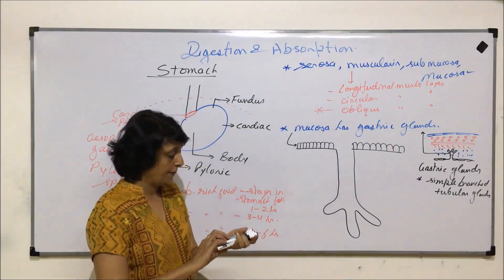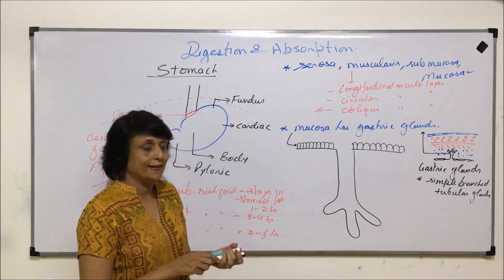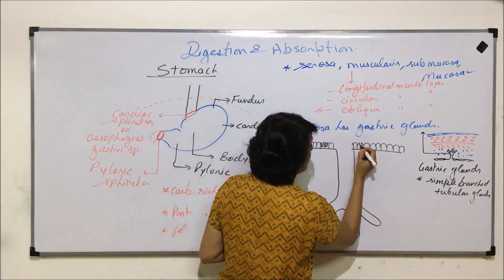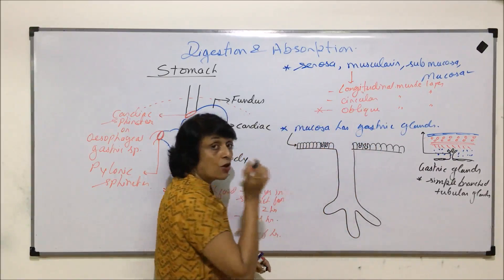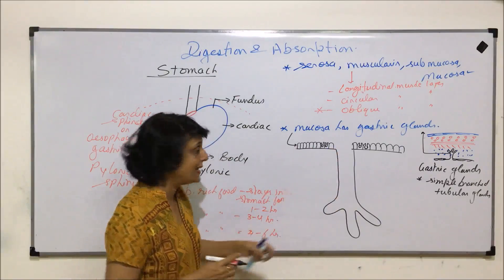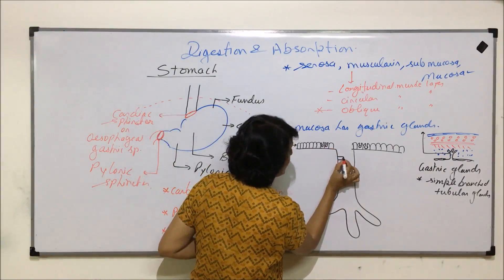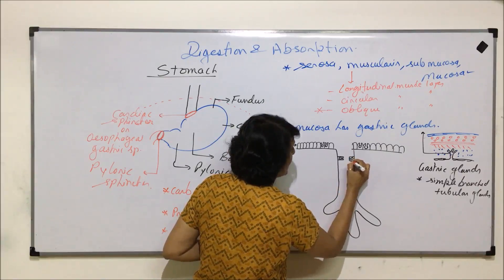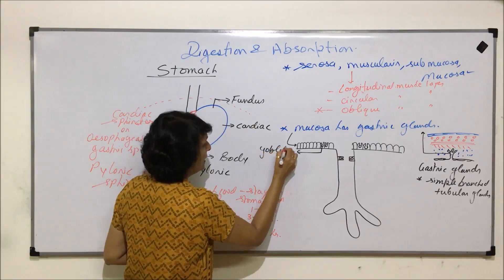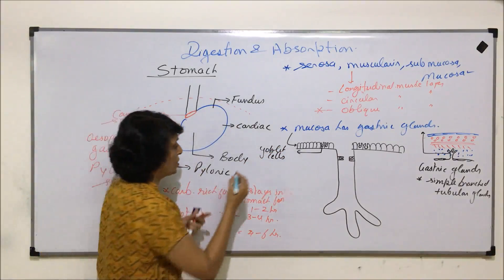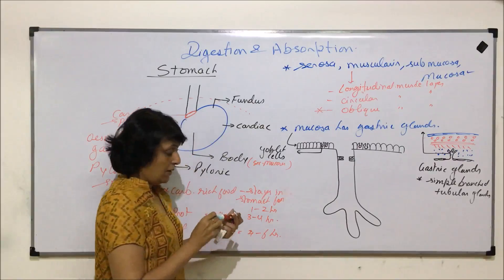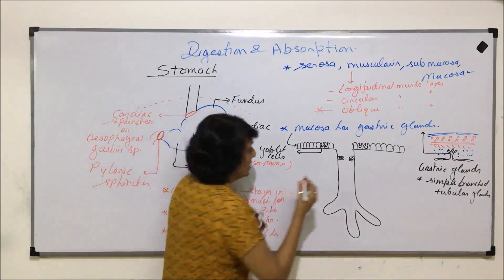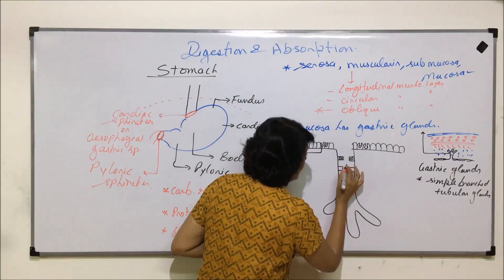Now for the cells found in the gastric glands, we will use different colors and shapes. On the surface and inside the gland are mucus cells, also called goblet cells. These goblet cells are found almost everywhere — on the upper surface in the mucosa and also within the gland part.